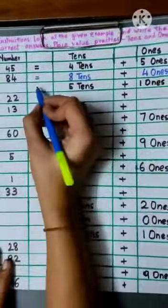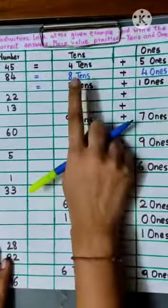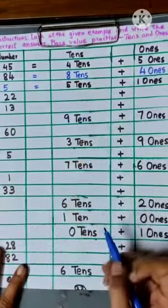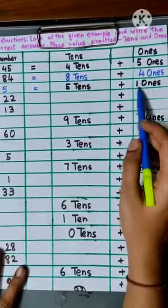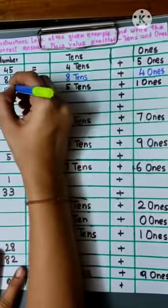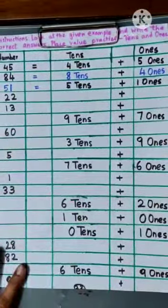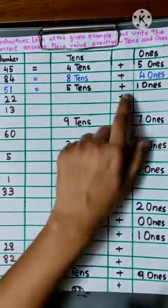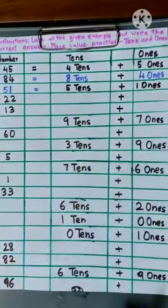Now, look here. There are 5 tens, so the first number would be 5, and 1 ones, so the second number would be 1. The number is 51. 51 makes 5 tens plus 1 ones.